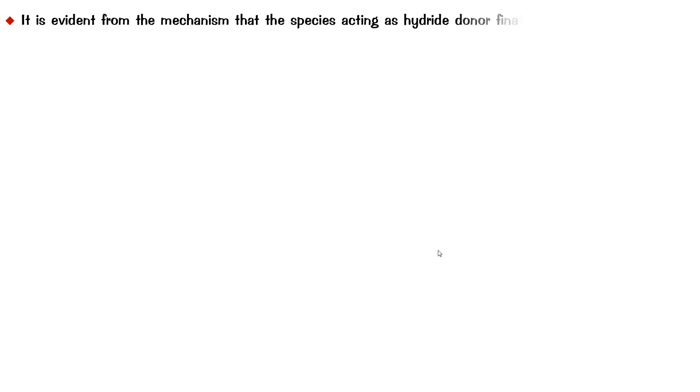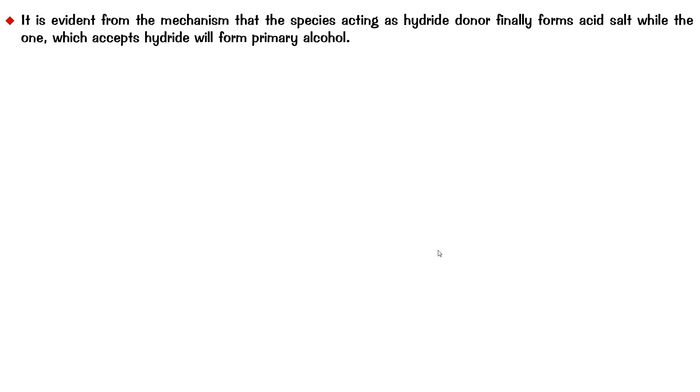Welcome to part 2 of the Cannizzaro reaction mechanism tutorial. In the last video we looked at the mechanism of Cannizzaro and figured that the mechanism clearly tells us that the species acting as the hydride donor finally forms the acid — it gets oxidized to the acid — while the one which accepts the hydride gets reduced to the primary alcohol.